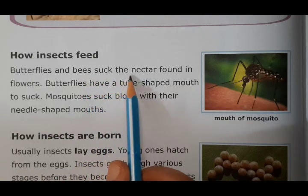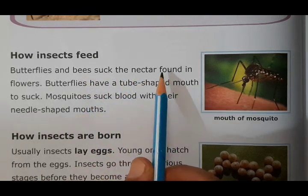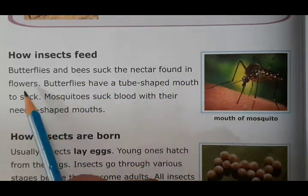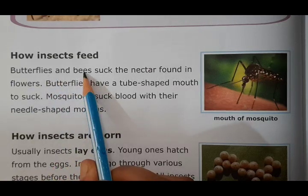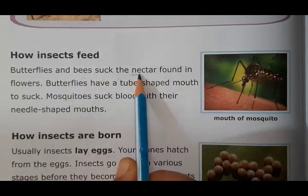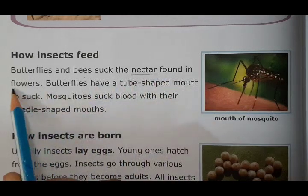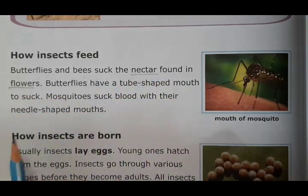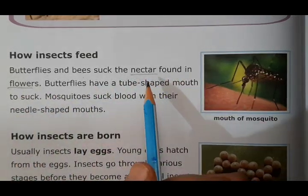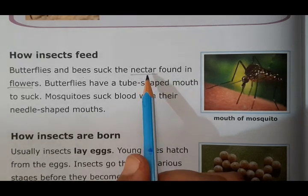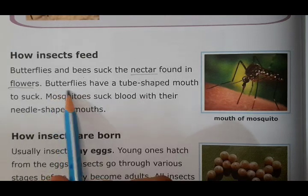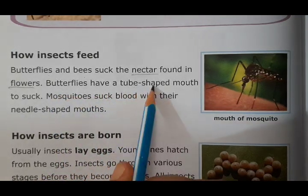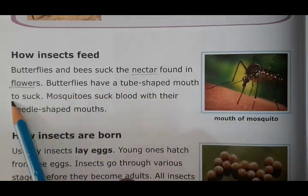Butterflies and bees suck the nectar found in flowers. They drink the juice found inside flowers. Butterflies have a tube-shaped mouth to suck — the mouth of a butterfly is like a tube shape, and with it they suck nectar from the flowers.